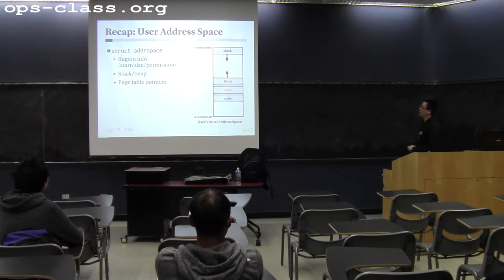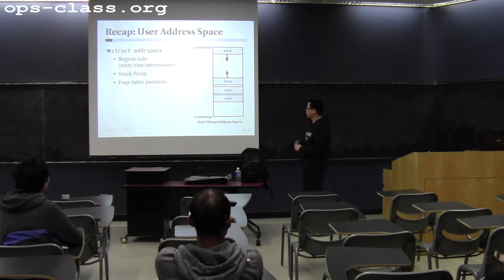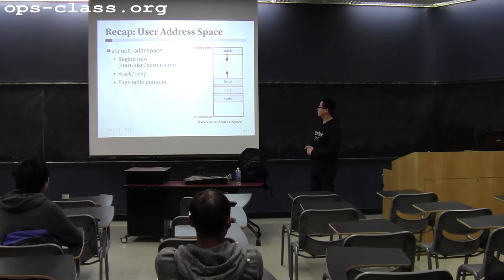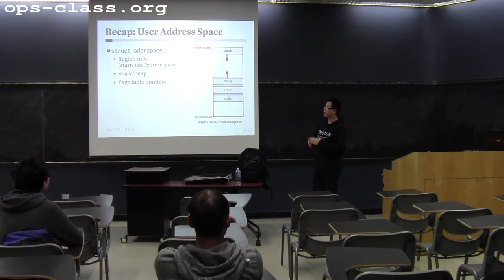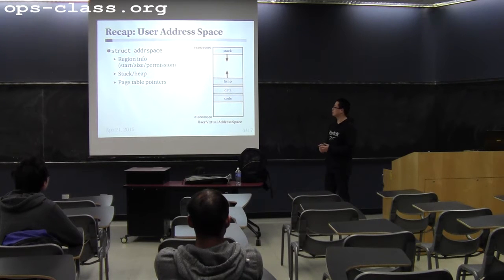We briefly talked about the address-based design — a view of the user's virtual address from zero up to two gigabytes. The user may have a code segment, data segment, and heap. Most programs will have these two segments, and some user programs may use malloc, in which case the program has a heap region with variable size. Every program also has a stack segment, which starts from the top of the user address space and grows downward. Heap and stack are special in that their size can change, while code and data have fixed sizes.